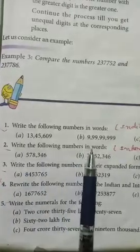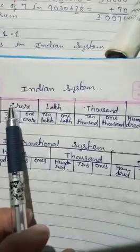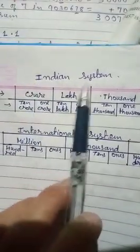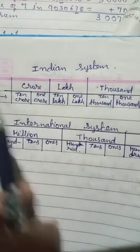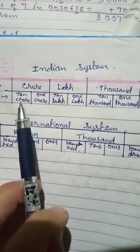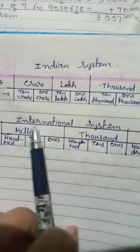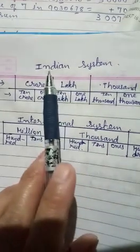Next you will see how to write in words in the international system and how to count in it. Remember in the Indian system we have ones, thousand, lakh, and crore — that is the system we use inside India. When we say international, it means suppose you want to buy or exchange something with China, Bangladesh, England, or America — in that case we will not use our system, we will use the international system.